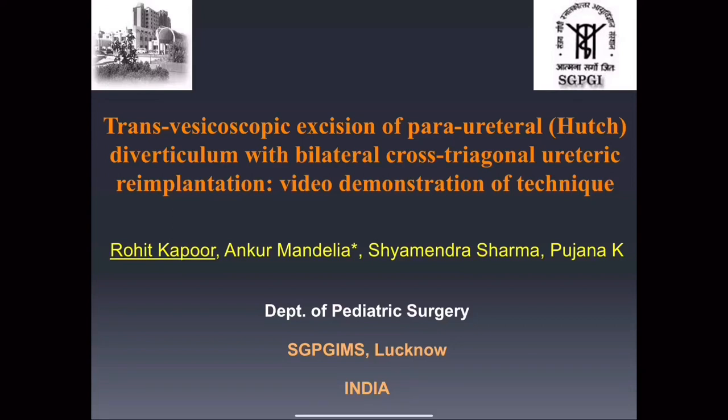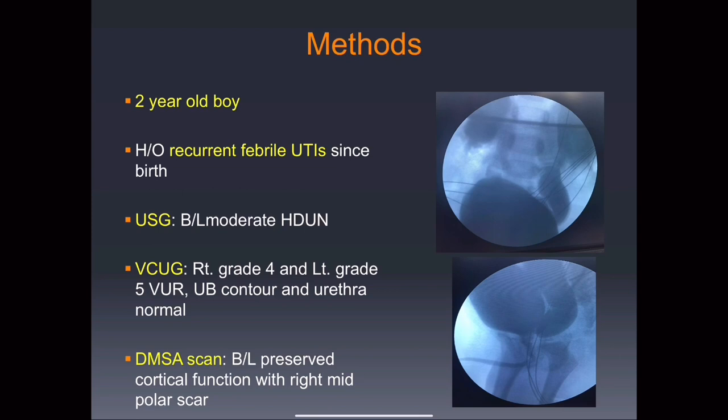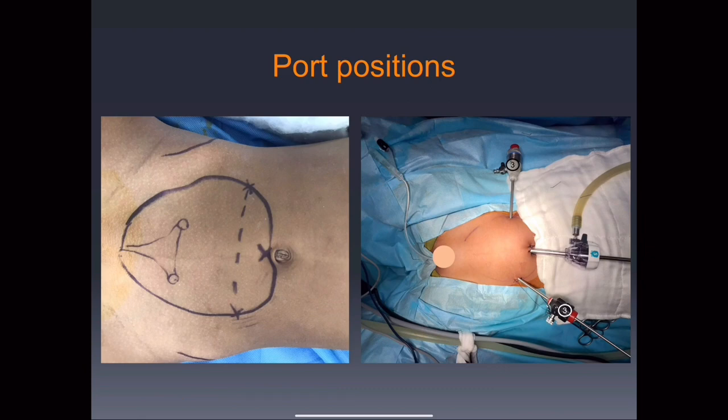Greetings from Sanjay Gandhi Institute, Lucknow. We will be sharing our operative technique of transvesicoscopic excision of perivesical Hutch diverticulum with bilateral cross-trigonal ureteral implantation. Our patient was a 2-year-old boy with history of recurrent febrile UTIs since birth. VCUG showed right grade 4 and left grade 5 vesicoureteral reflux, and DMSA scans showed a right mid-polar scar.